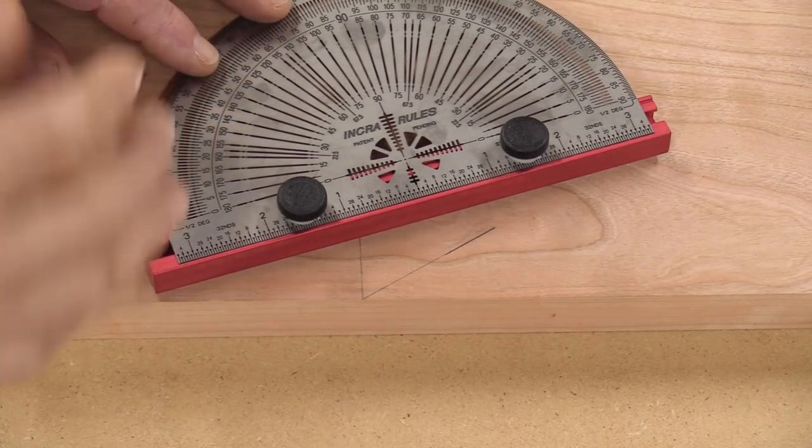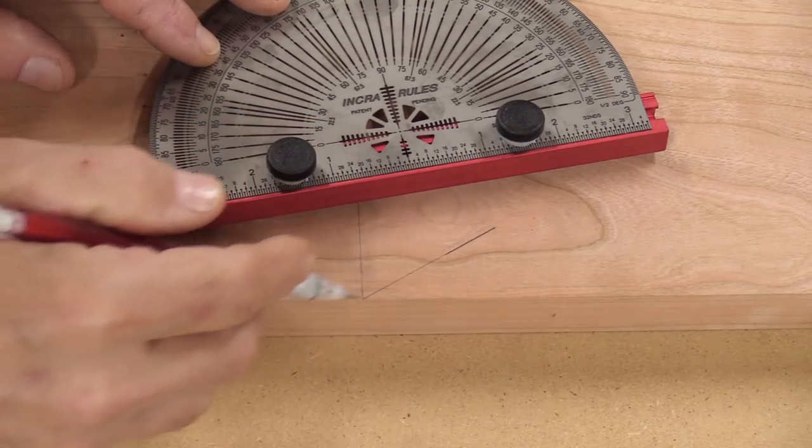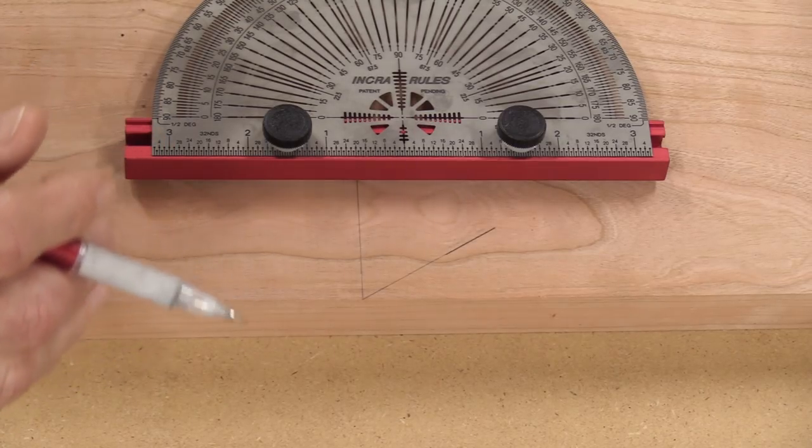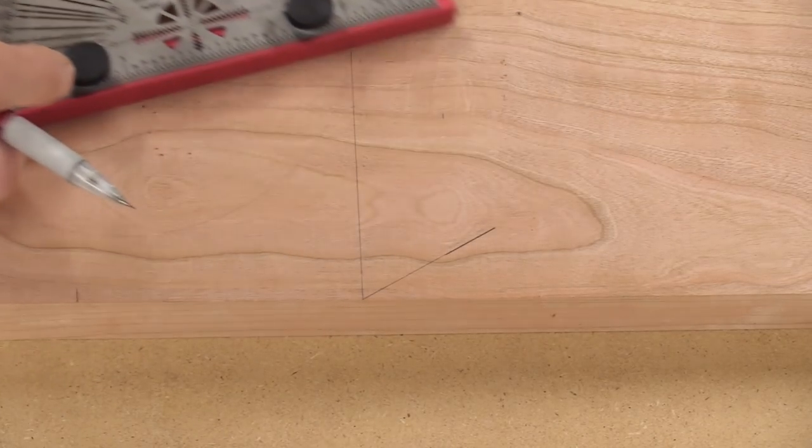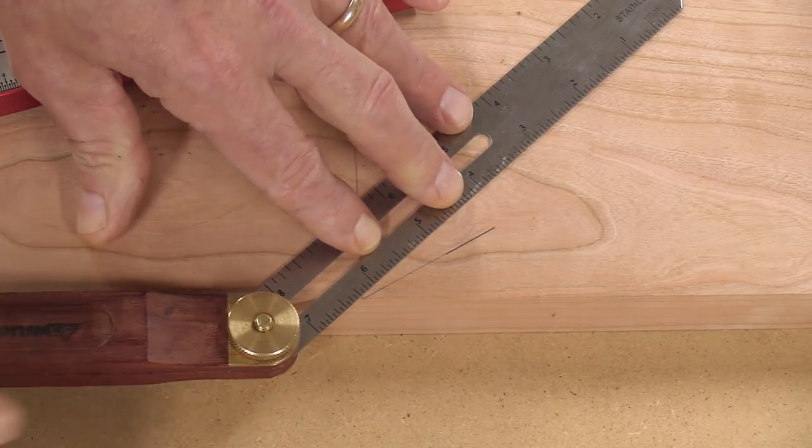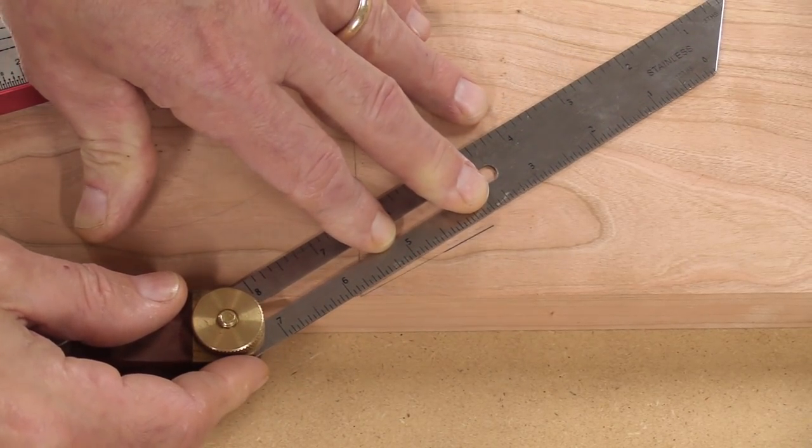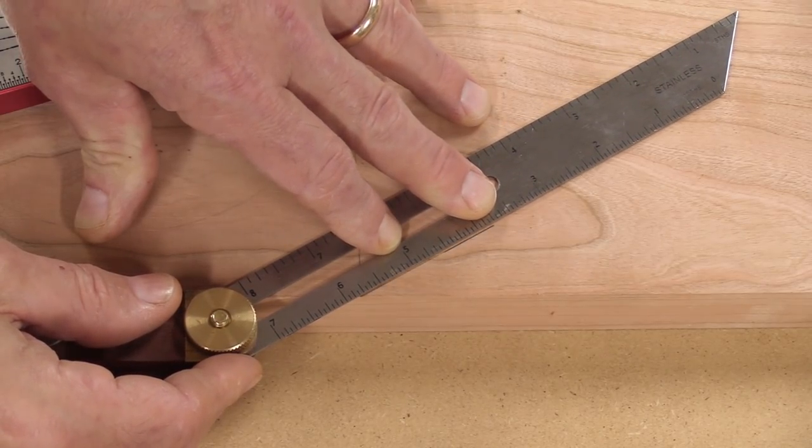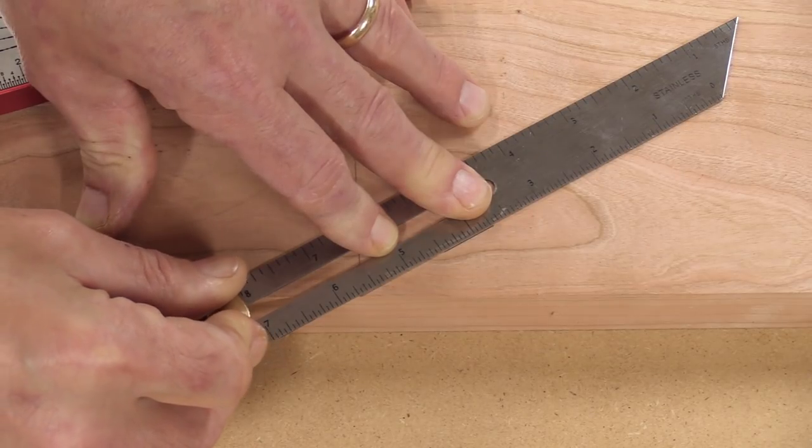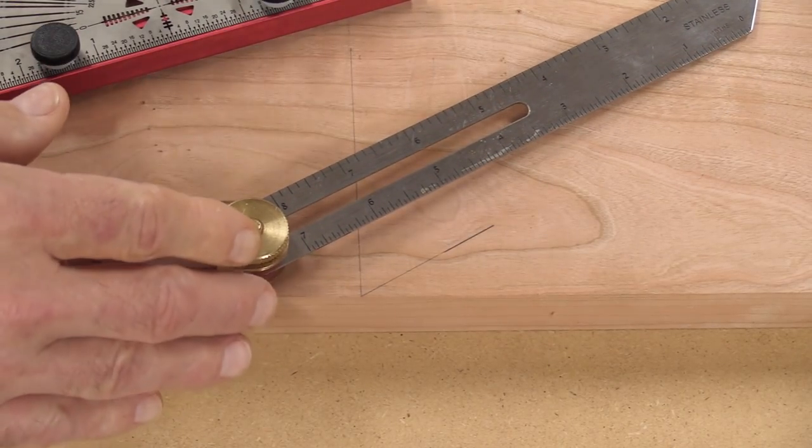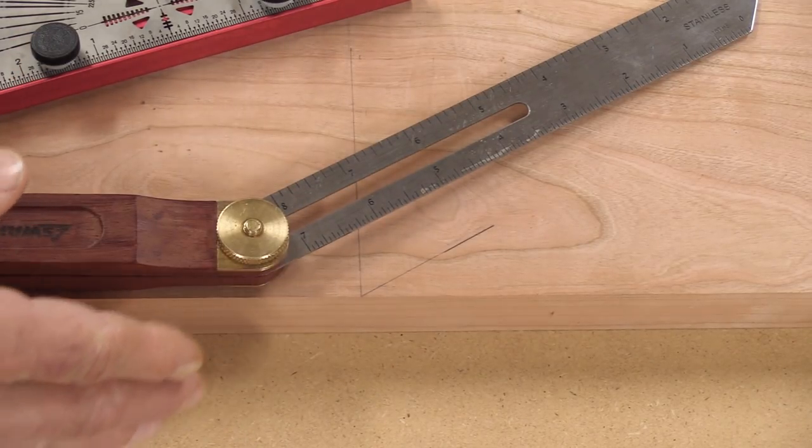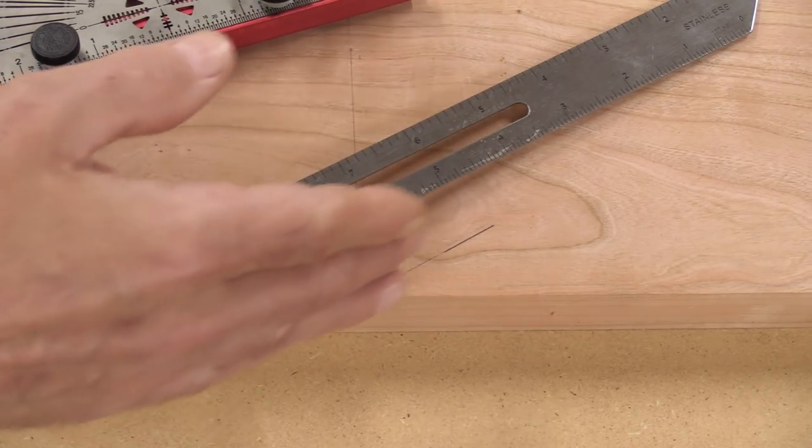So not only does this Precision Protractor allow me to make very accurate precise layout lines at 30 degrees, I can also use this to set up my equipment, which is something I do all the time. I can just take my bevel gauge here, loosen it up, and set it at 30 degrees. Now I can take this over to my table saw, my miter saw, even my jointer, and set up that fence at a precise 30 degrees.